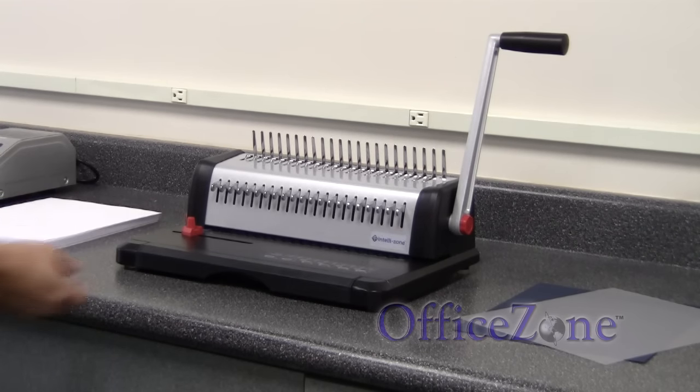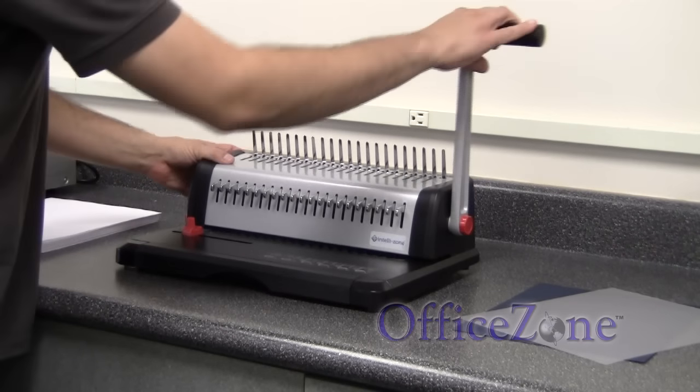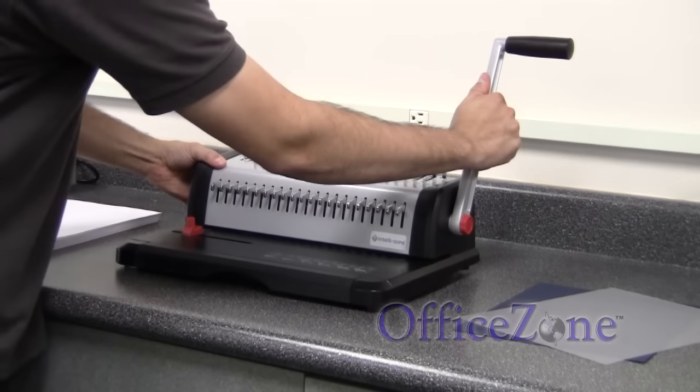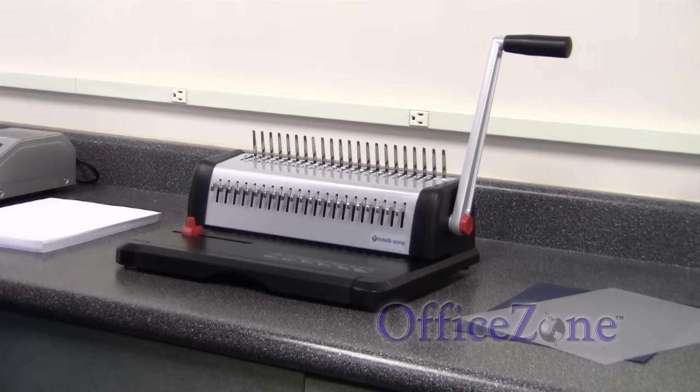The process is very simple. They all have a catch tray where the punched paper goes. They all have a punching die. If it's manual, there's a handle that you pull down to punch the paper. And depending on the machine, there's also going to be one that opens the combs up and closes them.